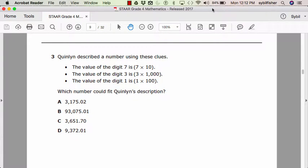Number 3. Quinlan described a number using these clues. The value of the digit 7 is 7 times 10. The value of the digit 3 is 3 times 1,000. The value of the digit 1 is 1 times 100. Which number could fit Quinlan's description?